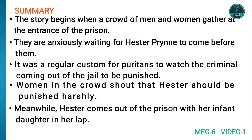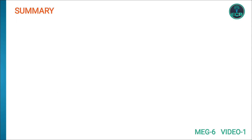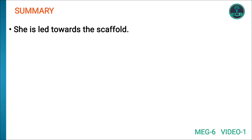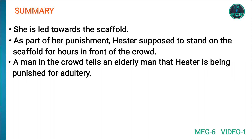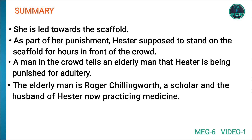Meanwhile, Hester comes out of the prison with her infant daughter in her arms. She is led towards the scaffold as part of her punishment. Hester is supposed to stand on the scaffold for hours in front of the crowd. A man in the crowd tells an elderly man that Hester is being punished for adultery. The elderly man is Roger Chillingworth, a scholar and the husband of Hester, now practicing medicine.